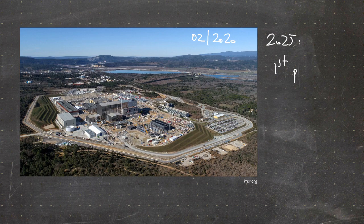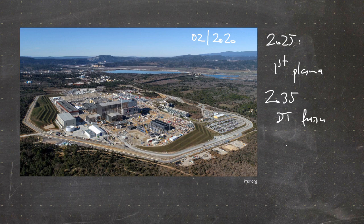A recent photograph shows the ITER construction site taken in February. ITER is scheduled to have its first plasma in 2025, and in 2035 the full-power D-T operation will take place — the date when, for the first time, more power will be released by fusion than was initially needed to heat the plasma. That will be a remarkable date in fusion research, and as you can see it is not too far away. In the next video we will talk about key parameters relevant to describing fusion.